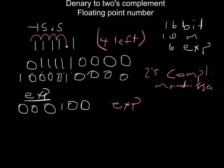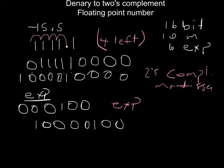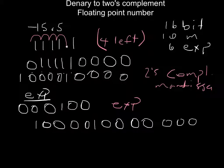Now I have my mantissa and my exponent, so I can write my floating point number. My mantissa is 1 0 0 0 0 1 0 0 0 0, and my exponent is 0 0 0 1 0 0. That is my floating point number in 2's complement.